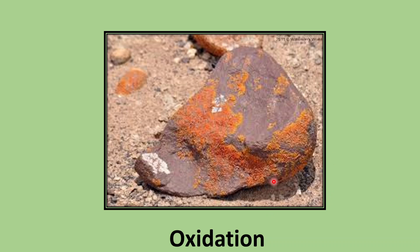Certain minerals present in rocks — particularly iron — react with oxygen in the air and rainwater. This chemical reaction forms rust on the rocks, changing their color into reddish brown, and ultimately the rocks break and form reddish soil which is rich in iron.